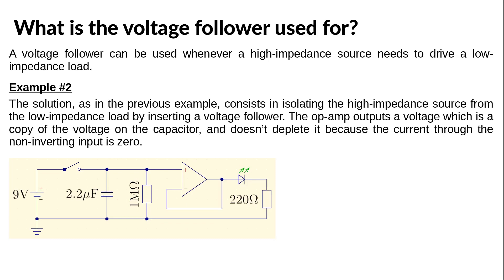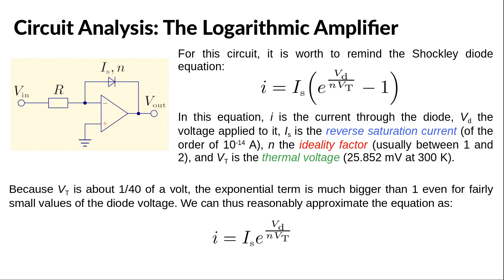Let us now continue our analysis of op-amp circuits with the logarithmic amplifier. As its name suggests, this circuit can output a voltage equal to the logarithm of the input voltage. It is useful at this point to remind the Shockley diode equation, which expresses the current through the diode as the reverse saturation current Is times the exponential of the voltage applied to the diode, divided by the ideality factor N times the thermal voltage Vt, minus 1. We can make a reasonable approximation by noticing that Vt is about 1/40 of a volt, so even with a small forward voltage, the exponential term is much bigger than 1, and we can drop the minus 1 to obtain a simplified equation.